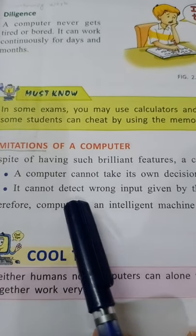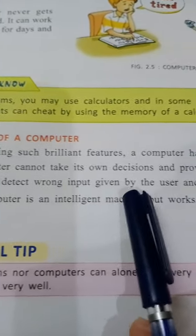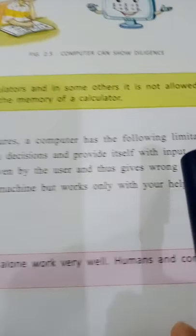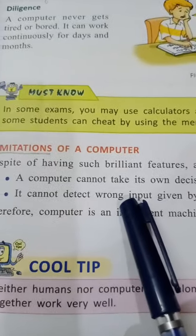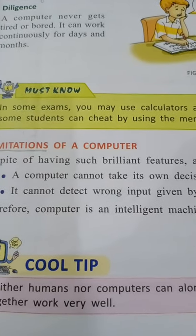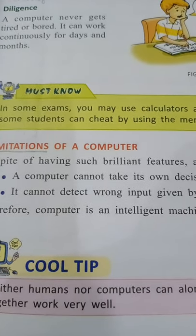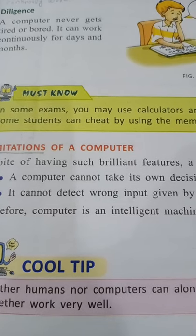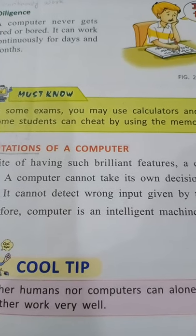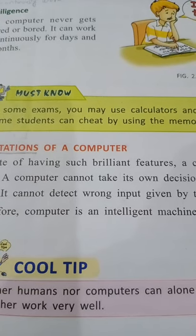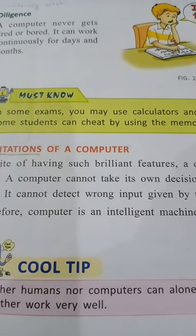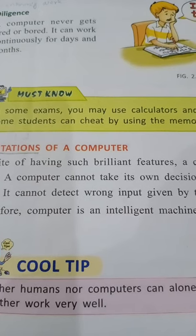The second limitation is: it cannot detect wrong input given by the user and thus gives wrong results. If we give the computer wrong input, it will not detect that it is wrong and will definitely give the wrong answer. So the first limitation is that it cannot take a decision on its own, and the second is that it cannot detect wrong input.